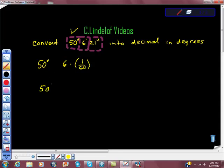So we have 50 degrees plus .1 minutes, plus we have this 21 seconds here. So 21 seconds is 21 times 1/60 times 1/60. So when we do that math out, we get something like this.